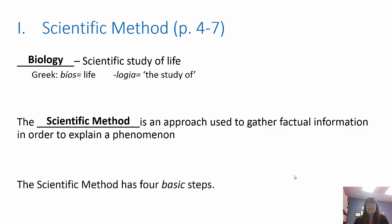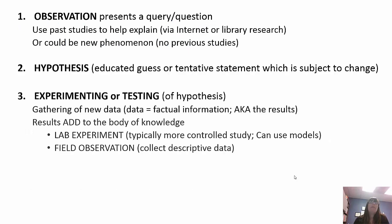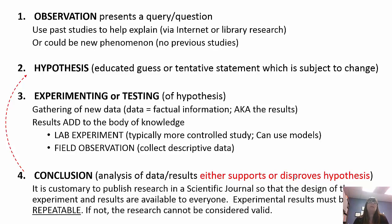There are four basic steps. The first one is observation. You have a question or you make an observation and you want to do some research and figure out why it's happening. You can either use past studies to help explain it, internet or library research, or it could be new — no previous studies done on it and you're going to be the first one to do it.